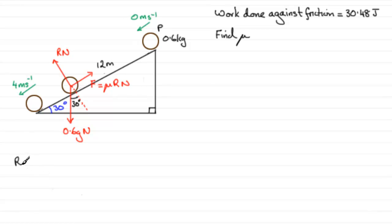We'll just mark that in there. And so if we do resolve perpendicular to the plane, taking outwards as positive, we would have R minus the component of the weight into the plane, which is going to be minus 0.6g cos 30 degrees, and that equals zero.